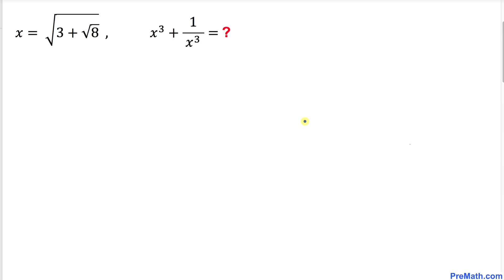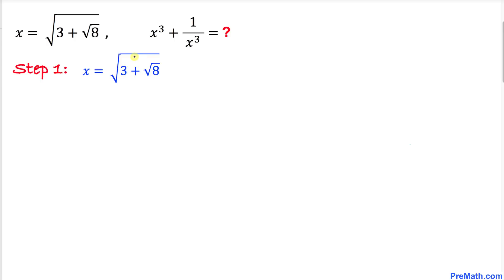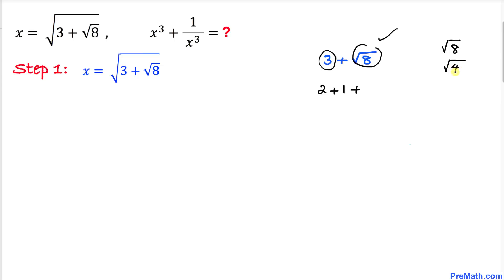Let's get started with the solution. Let's focus on the part square root of 3 plus square root of 8, and specifically the expression inside the radical. I can write 3 as 2 plus 1, and square root of 8 as square root of 4 times 2. Splitting that up: square root of 4 times square root of 2, and since square root of 4 equals 2, square root of 8 equals 2 times square root of 2.